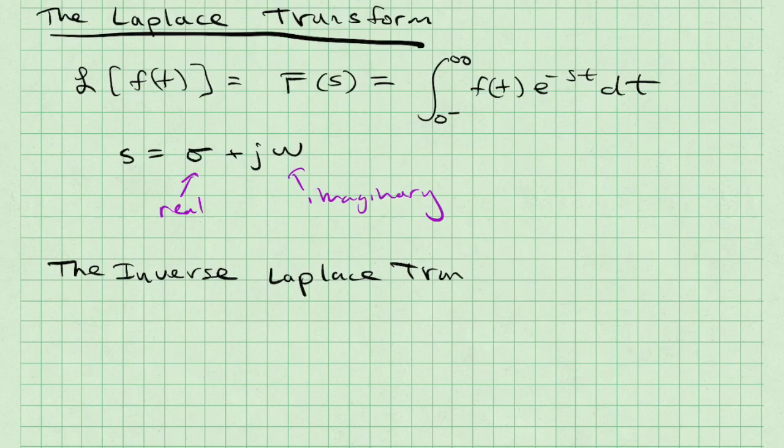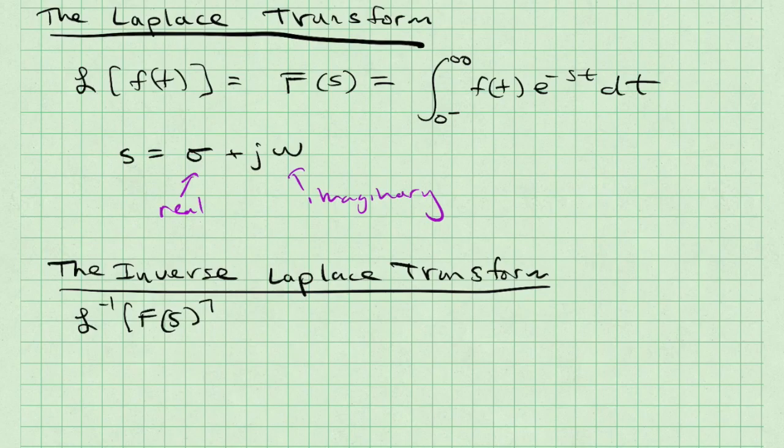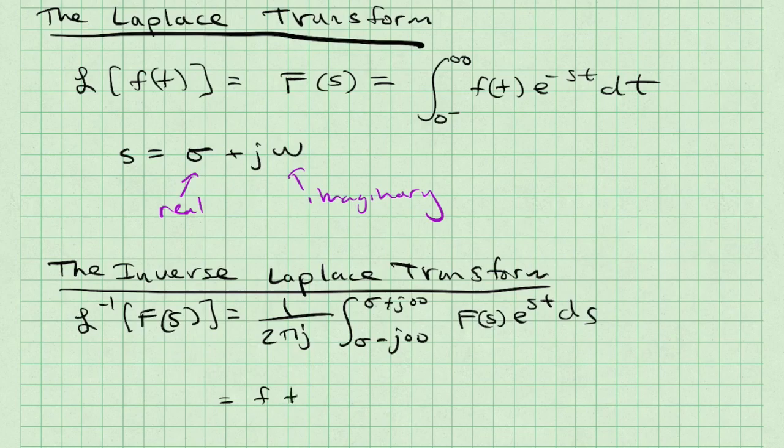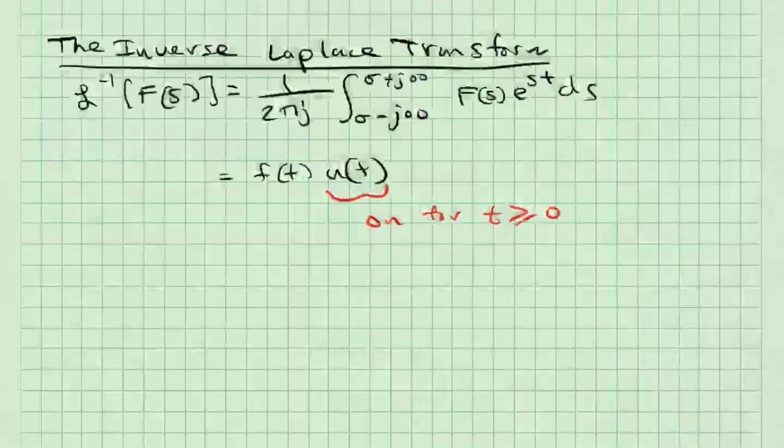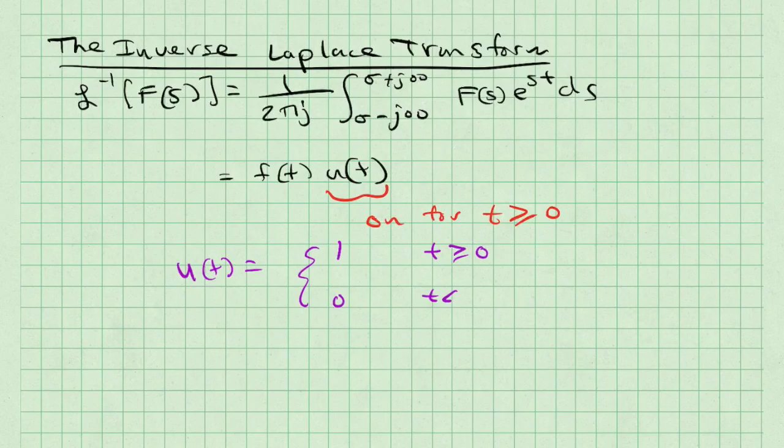On the other hand, I can take the inverse Laplace transform, which is represented as that squiggly L with an inverse, of the Laplace domain function big F(s). And it's equal to 1 over 2πj integral from sigma minus j infinity to sigma plus j infinity of F(s) e^(st) ds, which I represent as f(t)u(t). Integrating over all possible values of s, I eliminate s from the expression and I get f(t). Now, what is u(t)? u(t), which is called the unit step, is equal to 1 for t greater than or equal to zero and zero for t less than zero. It means that this function is on for t greater than or equal to zero.